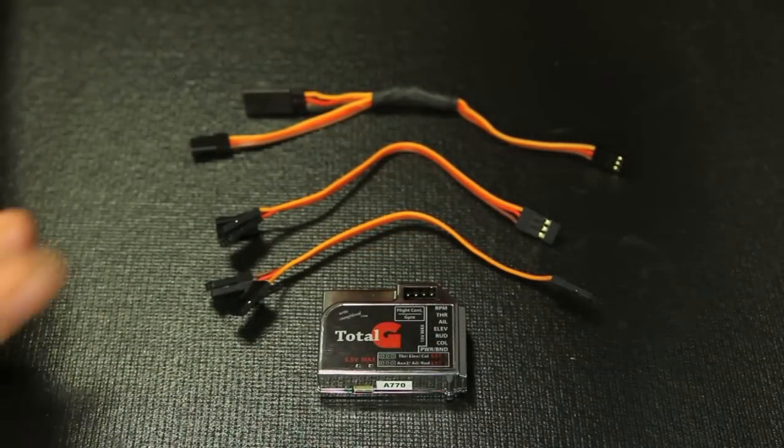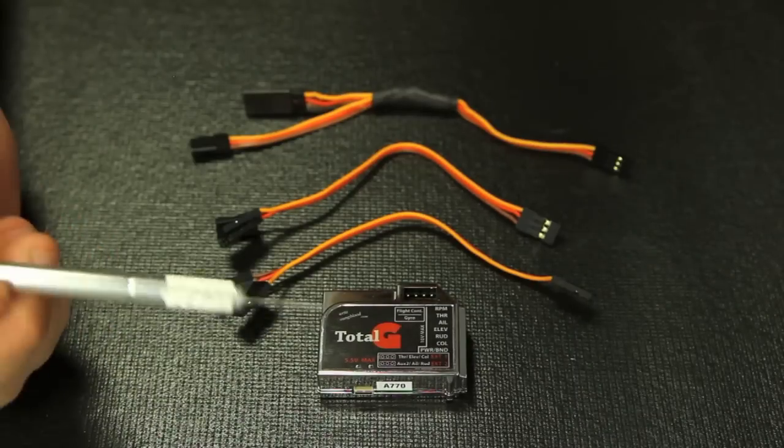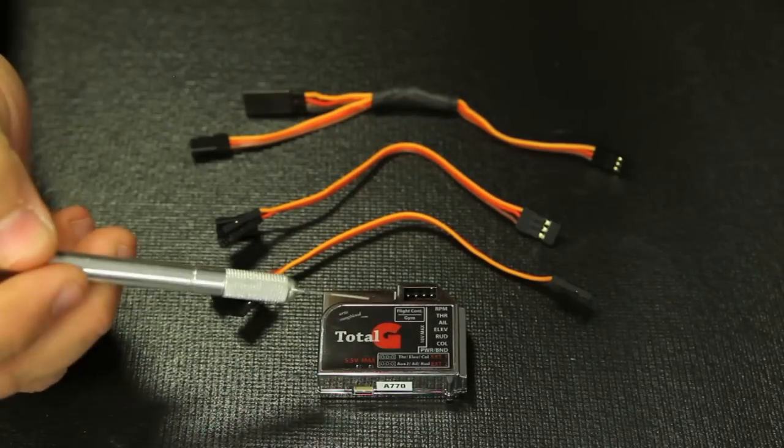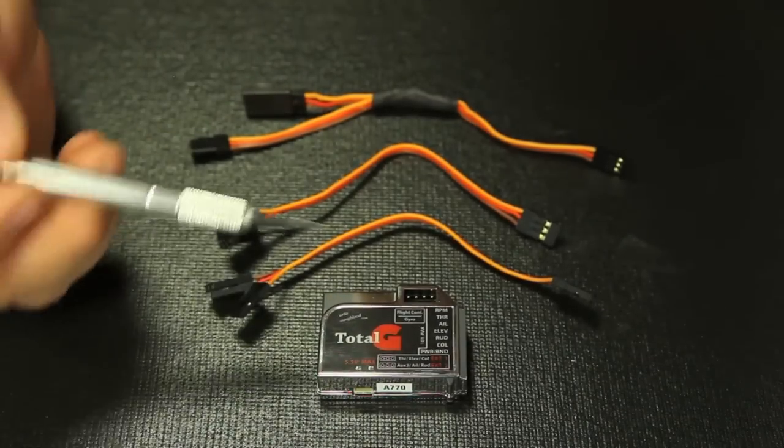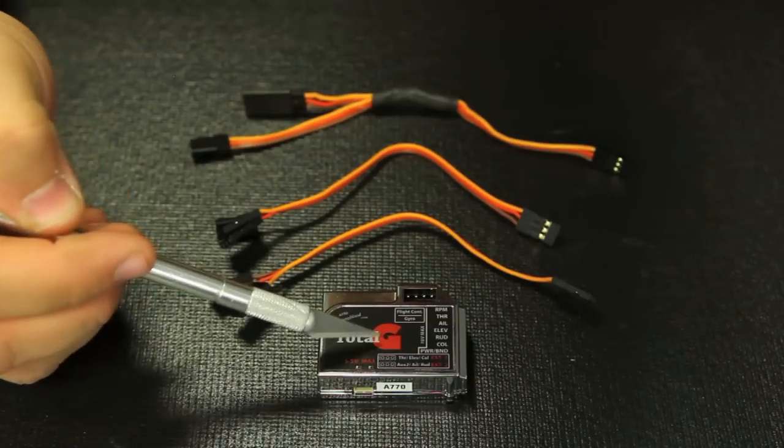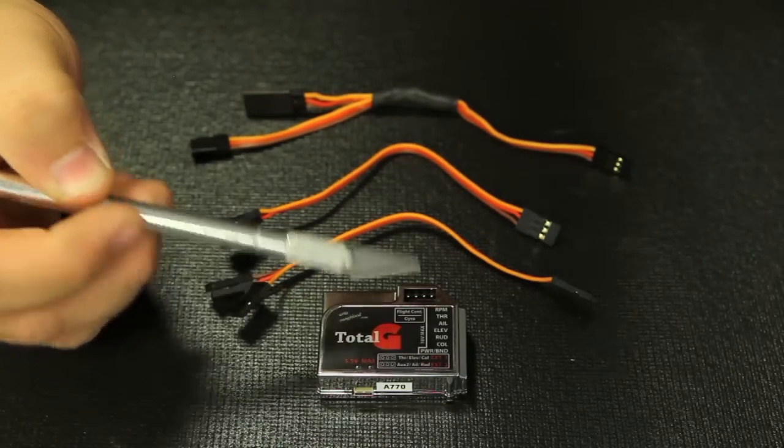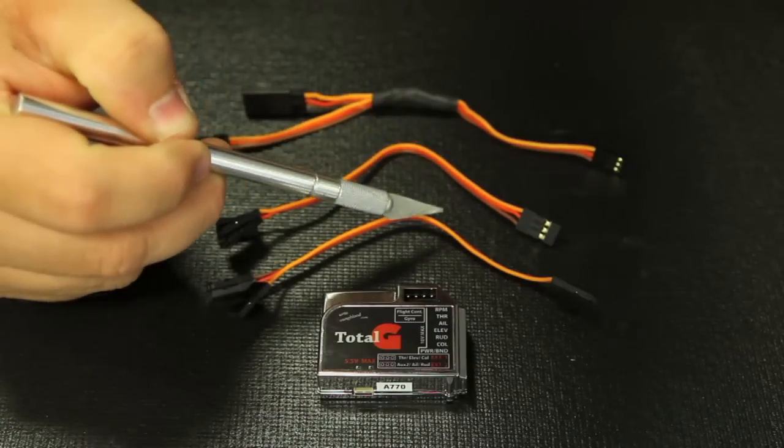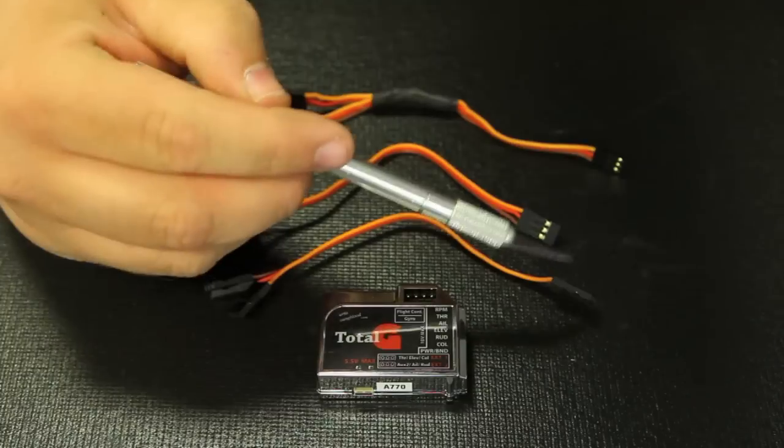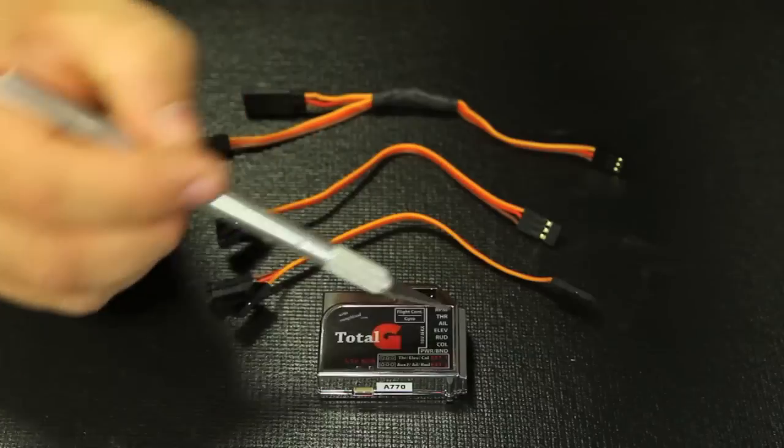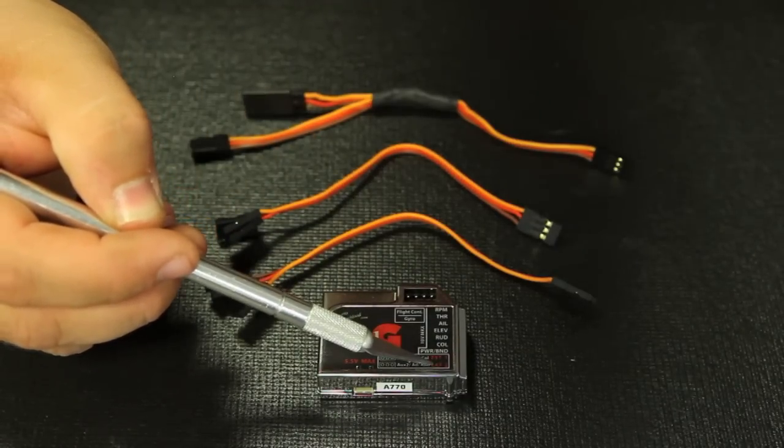Okay, we're going to have a closer look on how the Total-G flight control interfaces with external receivers. As you can see right here, you have a little diagram on the bottom of the Total-G here. One says external one and external two. You have two wires that are included with the Total-G itself. Basically, these plugs right here, the single plugs, are going to plug into external one and external two.